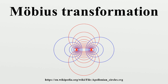Möbius transformations can be more generally defined in spaces of dimension n greater than 2 as the bijective conformal orientation-preserving maps from the n-sphere to the n-sphere. Such a transformation is the most general form of conformal mapping of a domain. According to Liouville's theorem, a Möbius transformation can be expressed as a composition of translations, similarities, orthogonal transformations, and inversions.